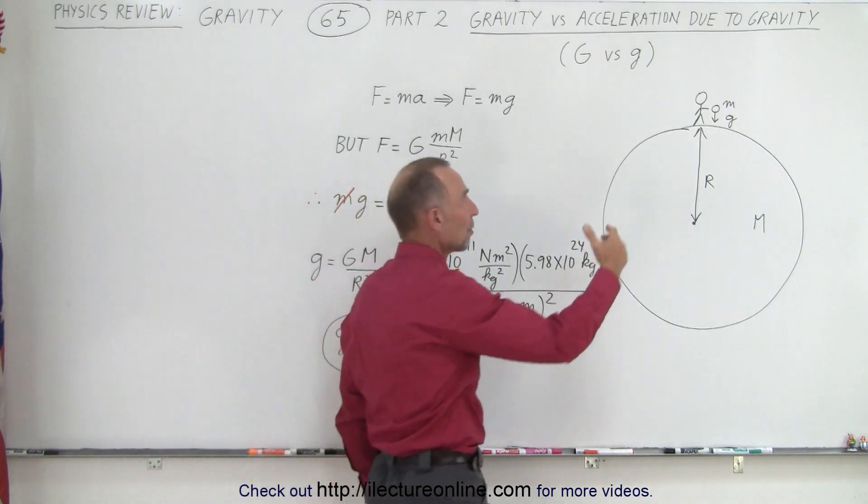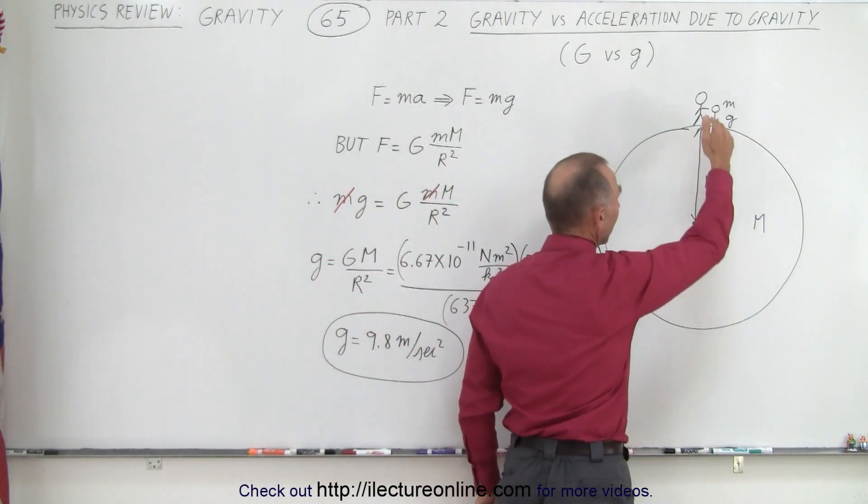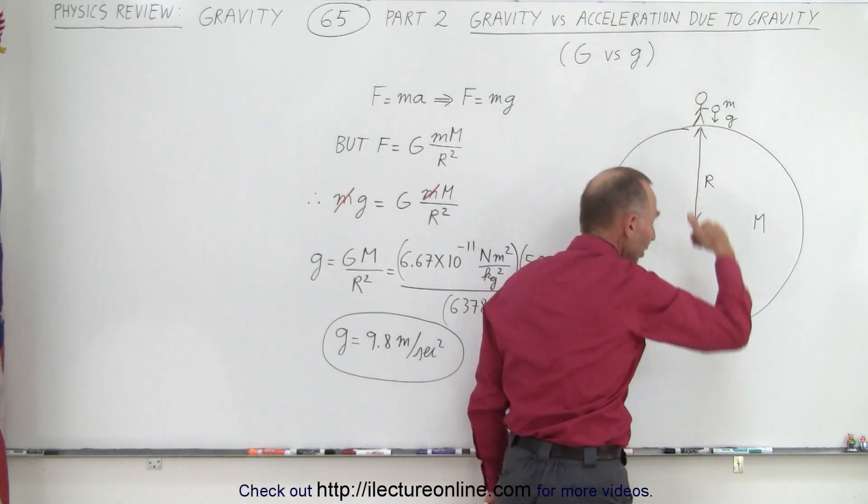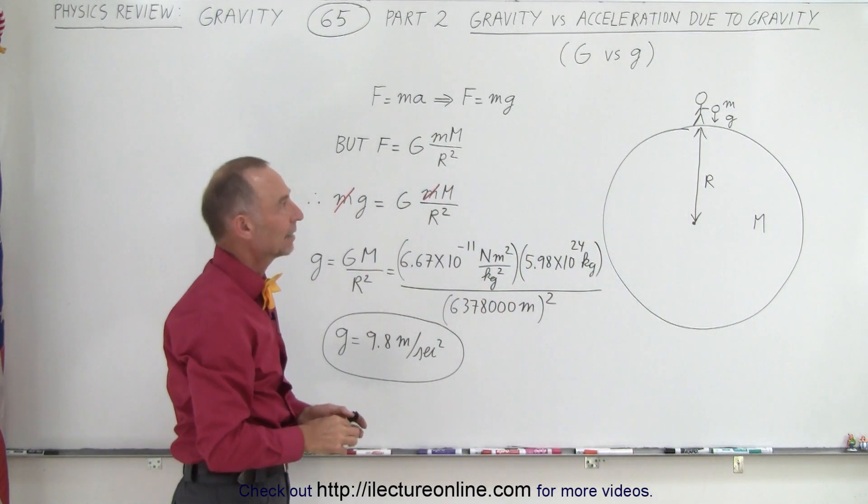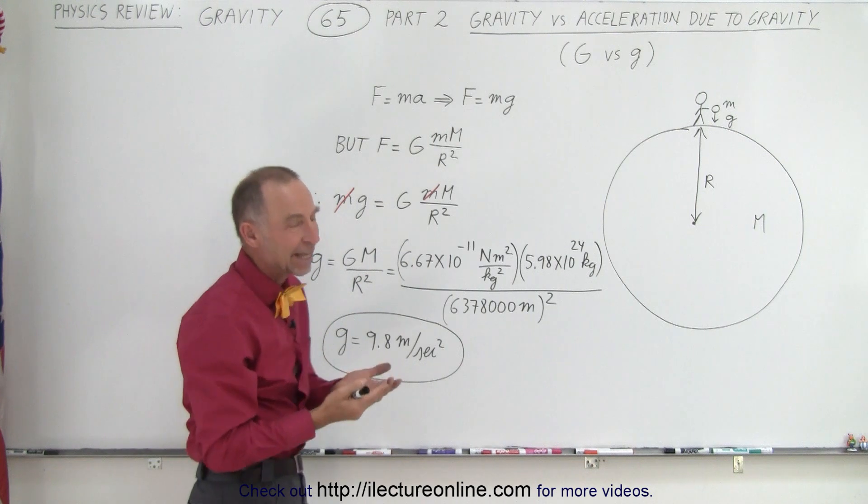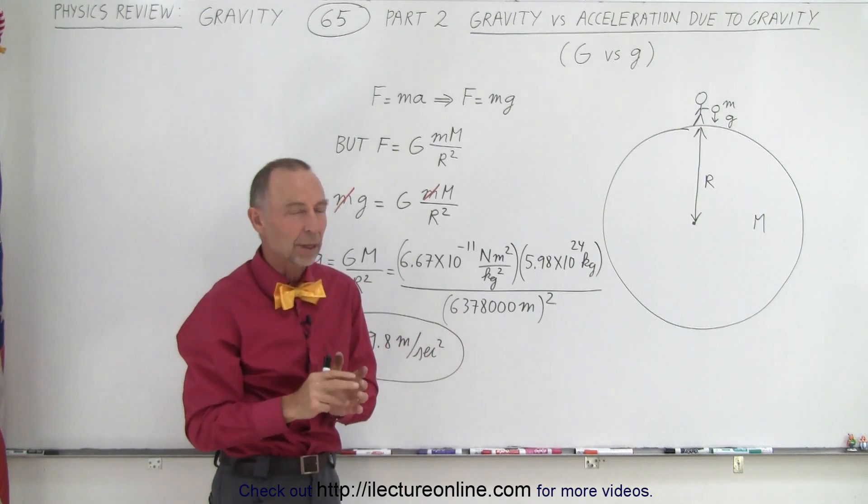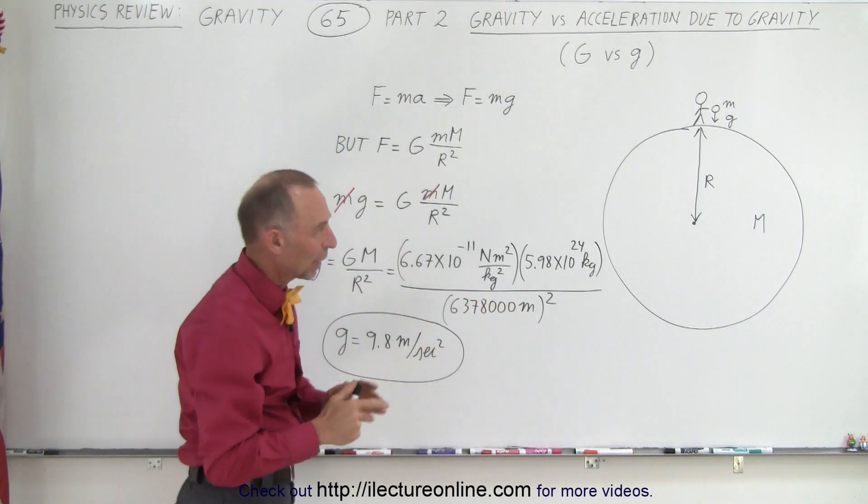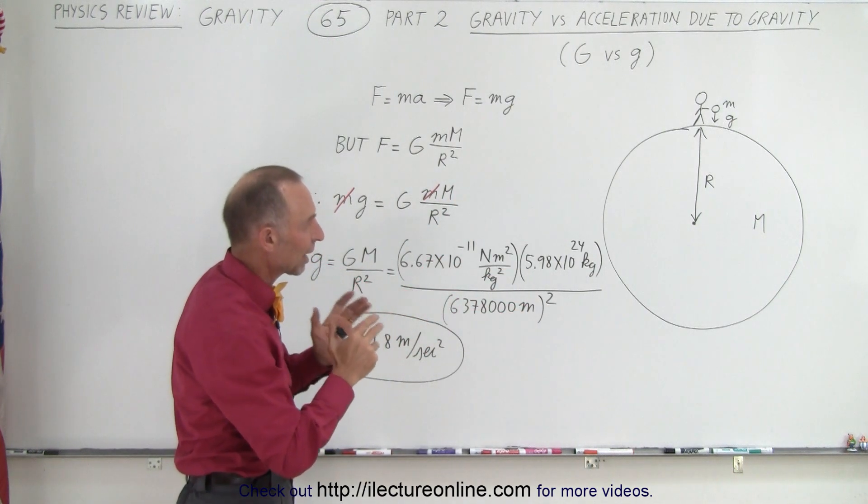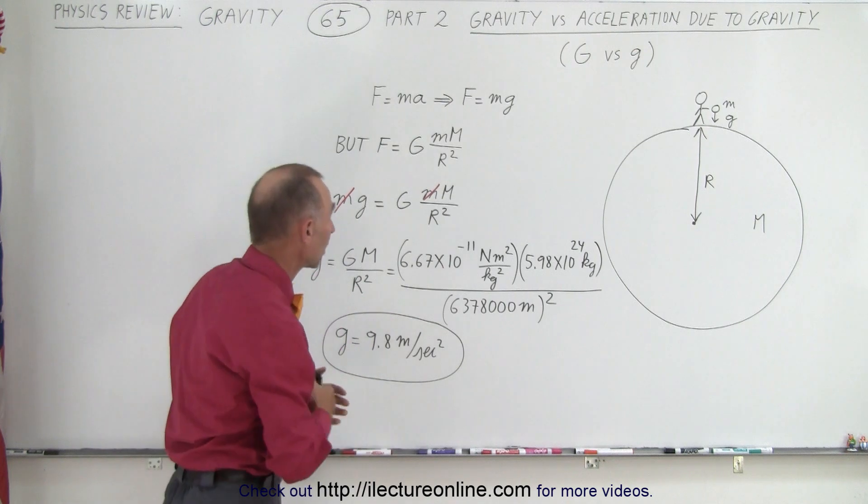Any object dropped near a big object like Earth will accelerate towards it at the acceleration due to gravity. This acceleration is 9.8 meters per second squared, roughly speaking. It's a little more at the poles and a little less at the equator, but we generally say it's about 9.8 meters per second squared.